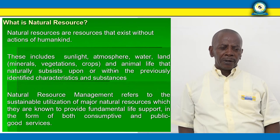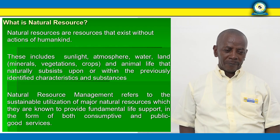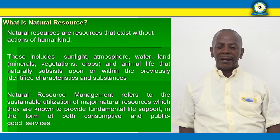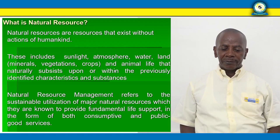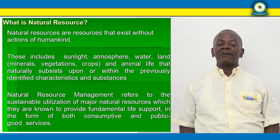What is a natural resource? Natural resources are resources that exist without the action of humankind. They are naturally occurring — like minerals, water, air, sunlight, atmosphere, land, vegetation, crops, and animal life that naturally subsists upon or within the previously identified characteristics and substances. Natural resource management refers to the sustainable utilization of major natural resources, which are known to provide fundamental life support in the form of both conservative and public good services.